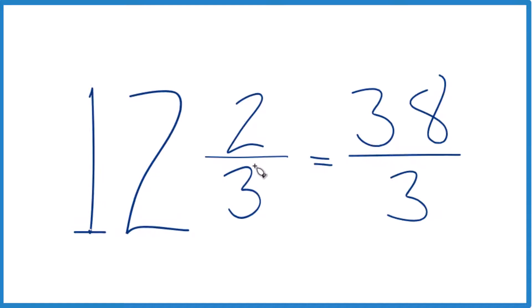The mixed number 12 and 2 thirds equals the improper fraction 38 thirds.